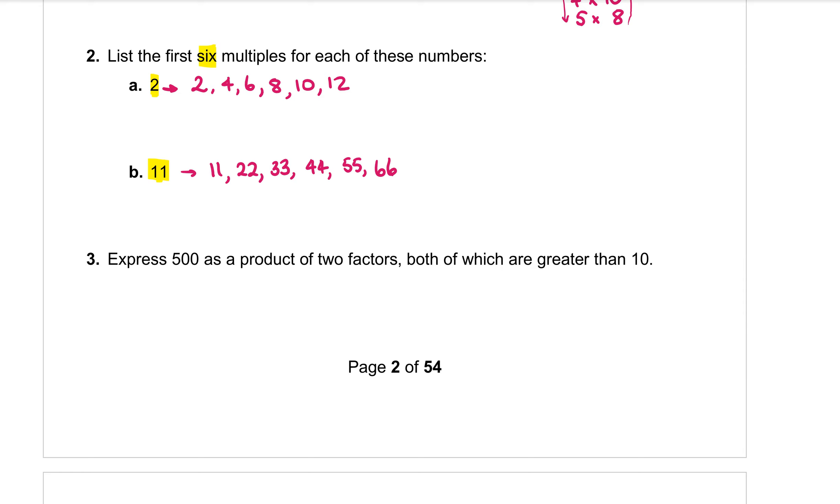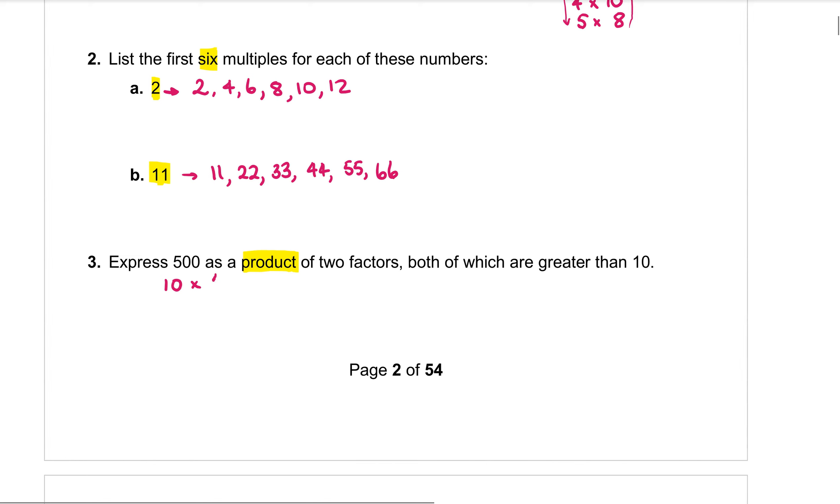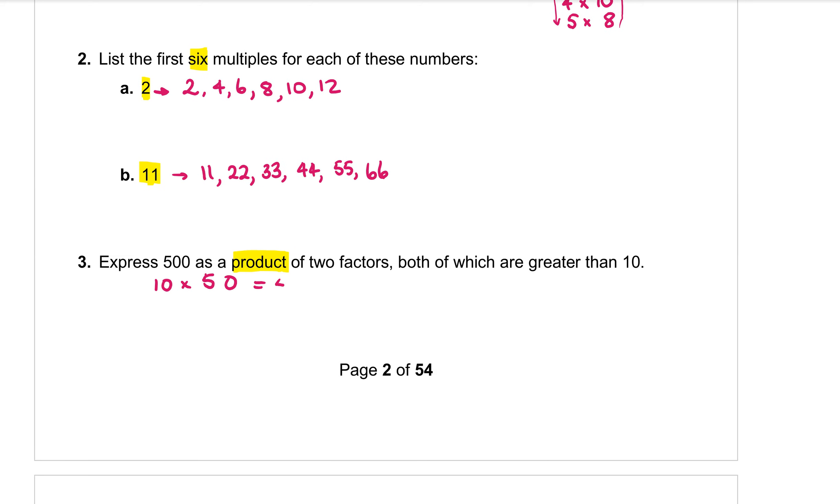Question three down the end is one to make you think a little bit. We want to express 500 as a product of two factors both of which are greater than 10. So what that is asking me to do, the word product means multiply. So I'm looking for two numbers, two factors that multiply together to make 500. Now the easiest times table that you could probably see from there would be 10 times by 50. Let's write that down. 10 times by 50. That makes 500. But the problem is it says that both of the factors need to be greater than 10. Equal to 10 is not greater than 10. So those two numbers 10 and 50 are not going to cut it for this question.